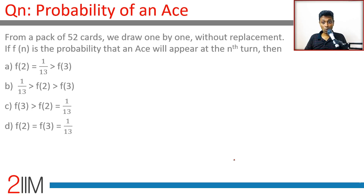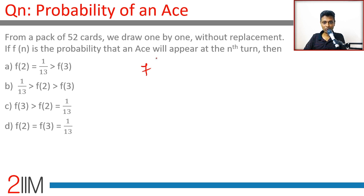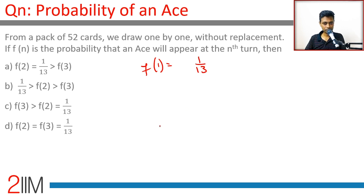From a pack of 52 cards we draw one by one without replacement. f(n) is the probability that the first ace will appear on the nth turn. f(1) is the probability of drawing an ace in the first turn, which is 1/13.